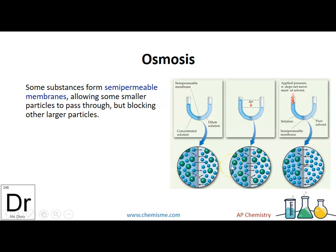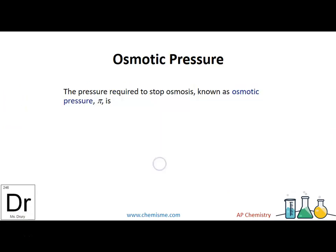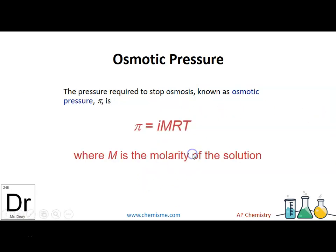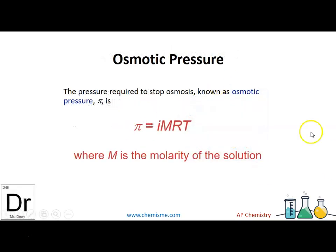The solvent moves to the concentrated side to make it more dilute. The solute particles are not moving through the membrane because they're too large. The osmotic pressure is the pressure you would need to stop that movement. The formula uses M for molarity of the solution, R for the gas constant, and T for temperature. The hotter it is, the more movement you have.